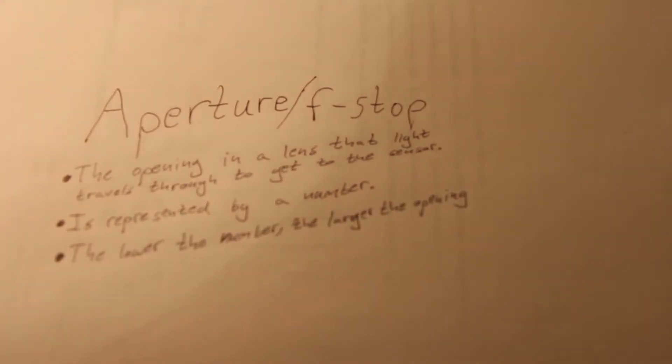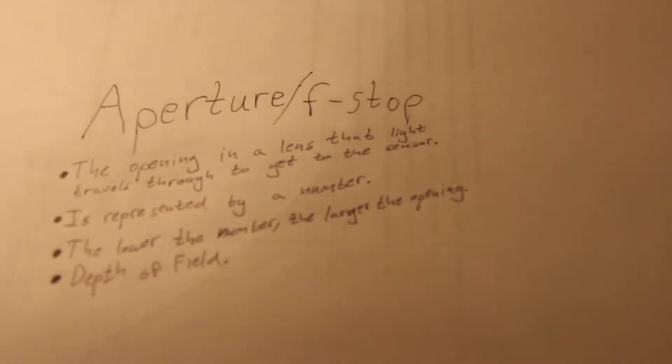If you want a blurry background like in all those pro photos, go for a lower f-stop number. This is called depth of field. That's all I have to say about aperture.